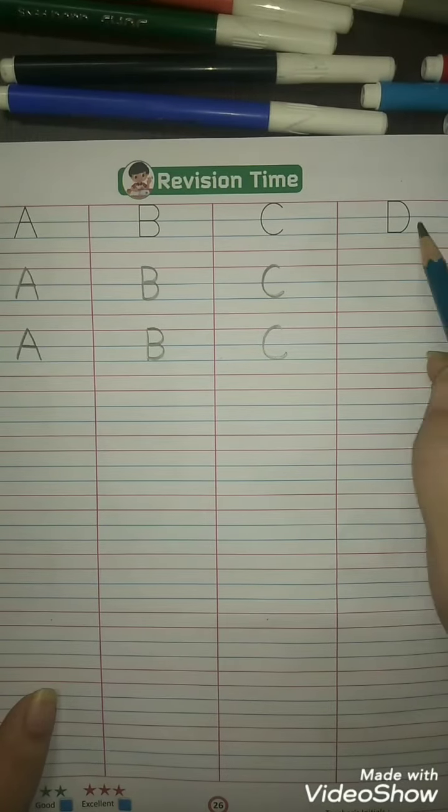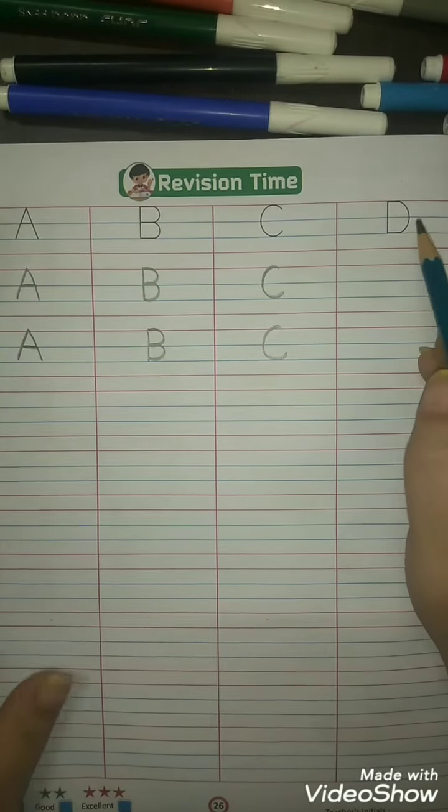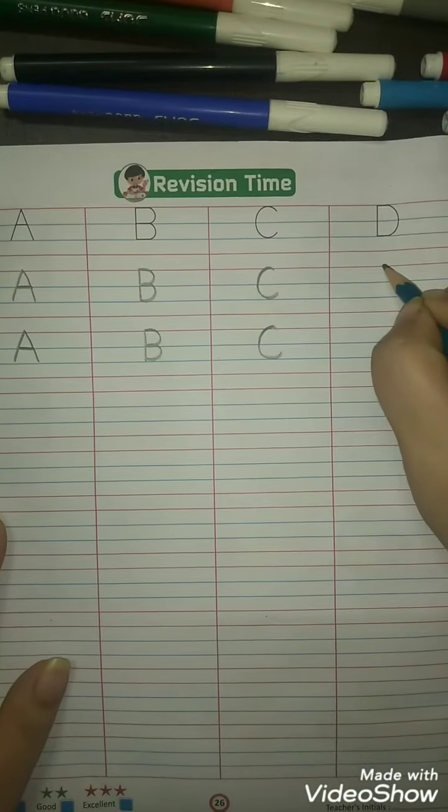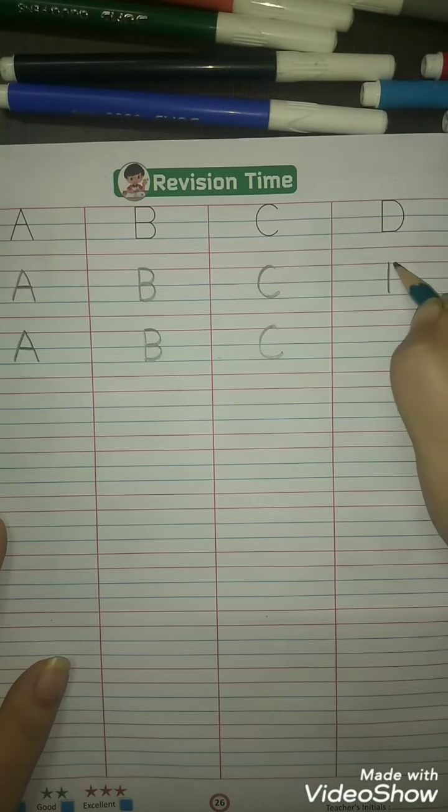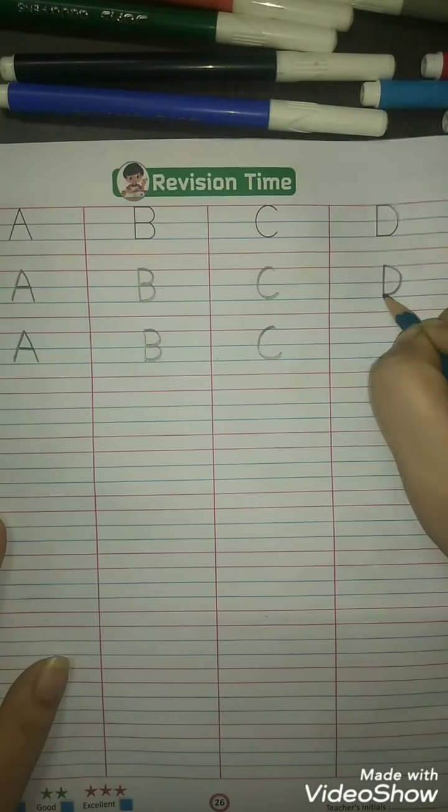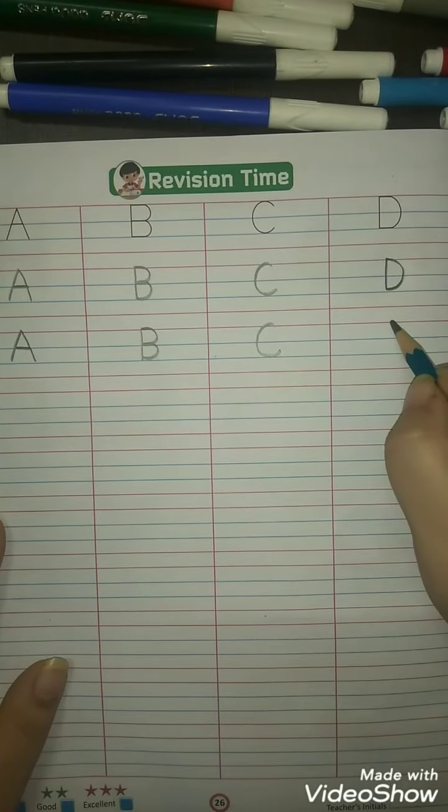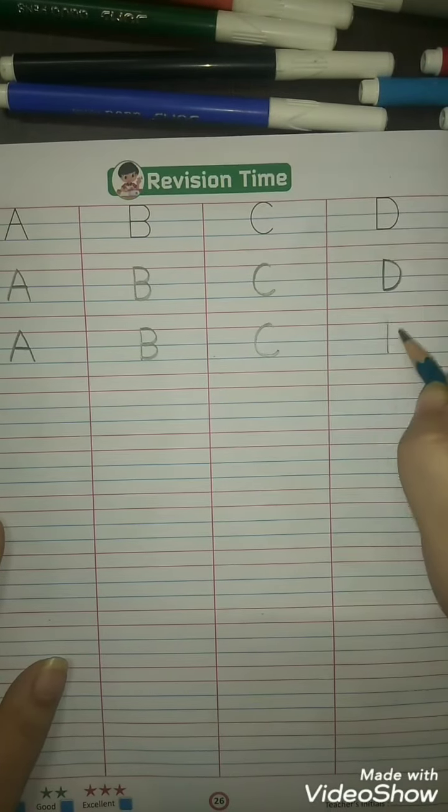Okay, now D, D for dog. So make a standing line and make a curve. D for dog. A, B, C, and D.